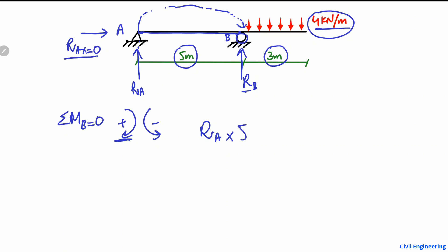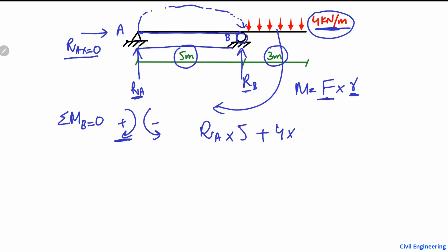Moment is force multiplied by the perpendicular distance from the point of interest to where the force acts — here 5 meters from A to B. The distributed load of 4 kN/m over 3 meters also creates a clockwise moment about B, so it is also positive. Converting the UDL to an equivalent point load: 4 × 3 = 12 kN, acting at the center of the loaded portion, which is 1.5 meters from the free end — so the moment arm is 1.5 meters.